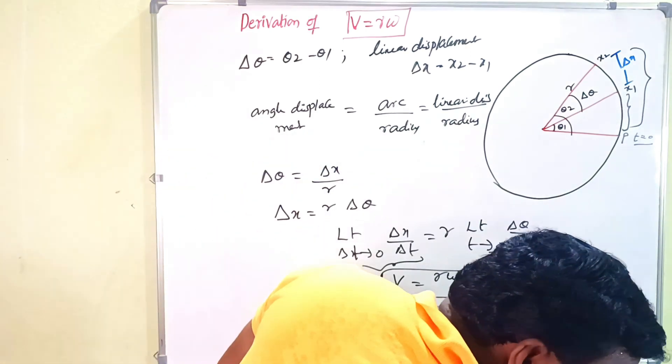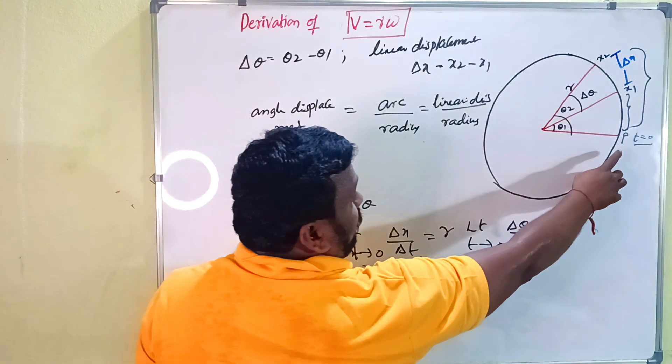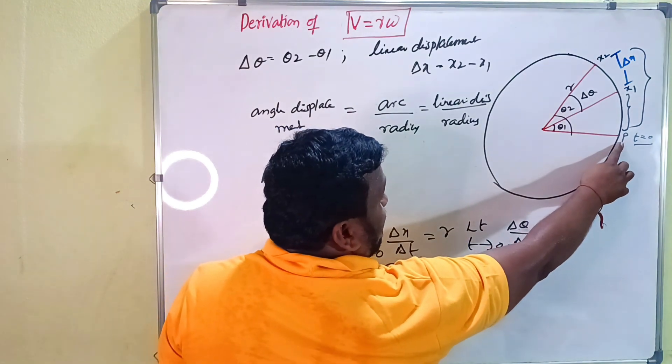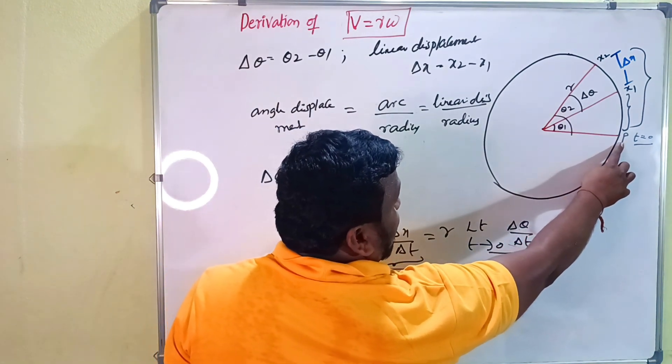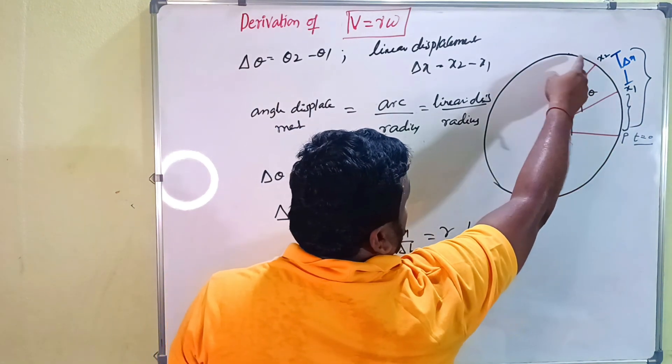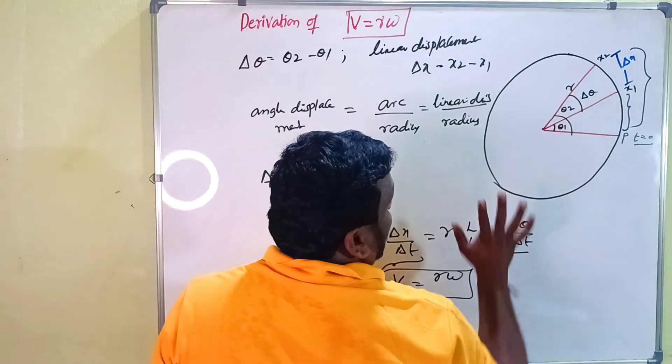So very simply: a particle P moves along a circular path of radius r. Starting from time t equals zero, the derivation shows that v equals r omega — where v is the linear velocity and omega is the angular velocity.